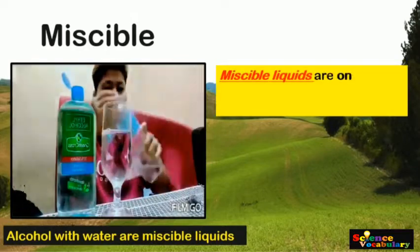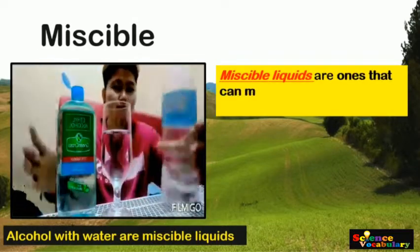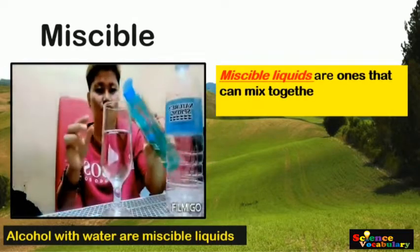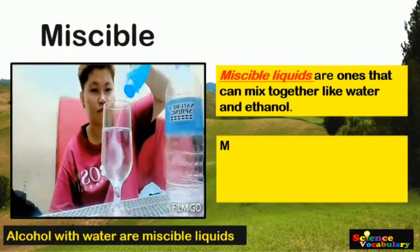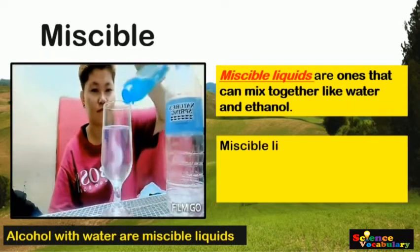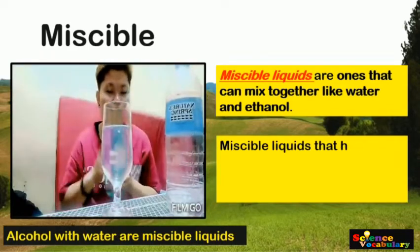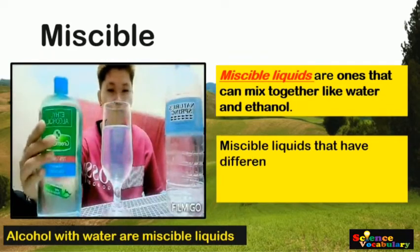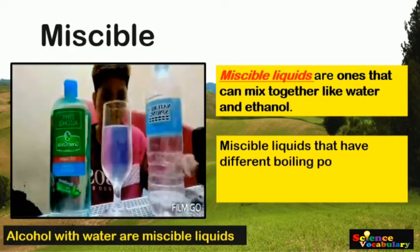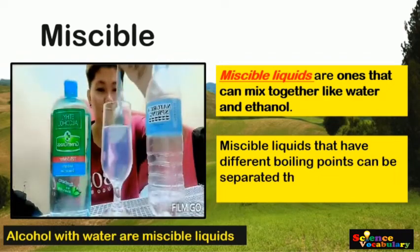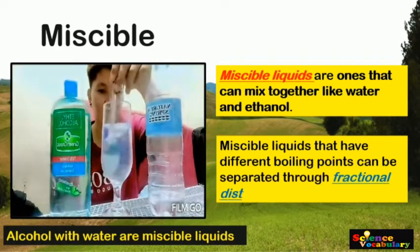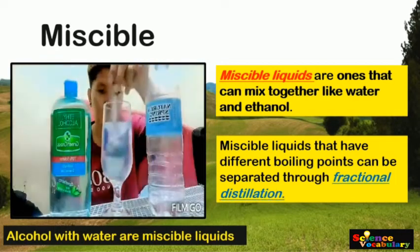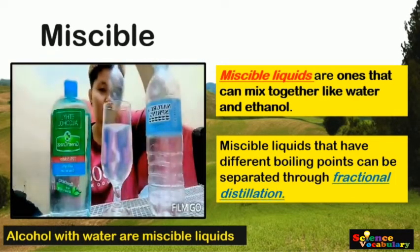Miscible liquids are ones that can mix together, like water and ethanol. Miscible liquids that have different boiling points can be separated through fractional distillation.